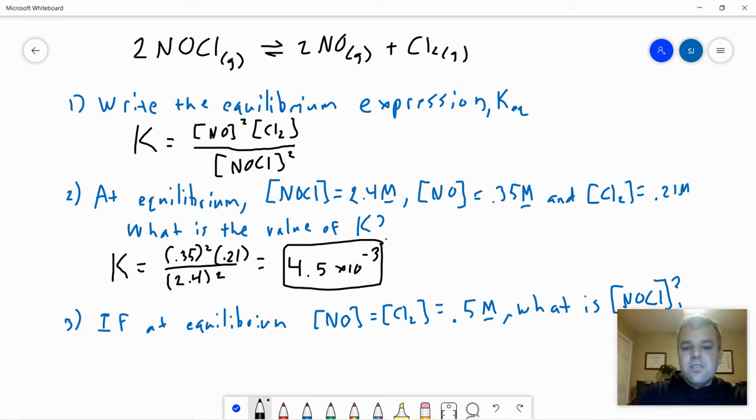Then it says, if at equilibrium the nitrogen monoxide and the chloride concentrations are 0.5 molar, what is the concentration of NOCl? Well we now know that 4.5 times 10 to the negative third is our value of K, which equals 0.5 squared times 0.5 divided by NOCl squared.